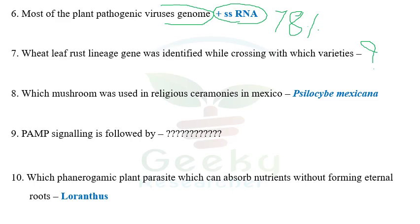The eighth question: which mushroom was used in religious ceremonies in Mexico? The answer is Psilocybe mexicana. This is an important mushroom especially used by Indo-Mexican people in their religious festivals. The options given included Amanita and other mushrooms, which are poisonous. Even though some people from Central America use Amanita for religious purposes, in the case of Indo-Mexican people they use Psilocybe mexicana for their religious ceremonies.